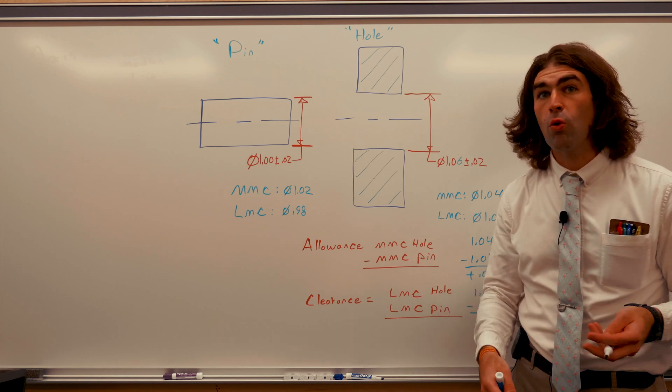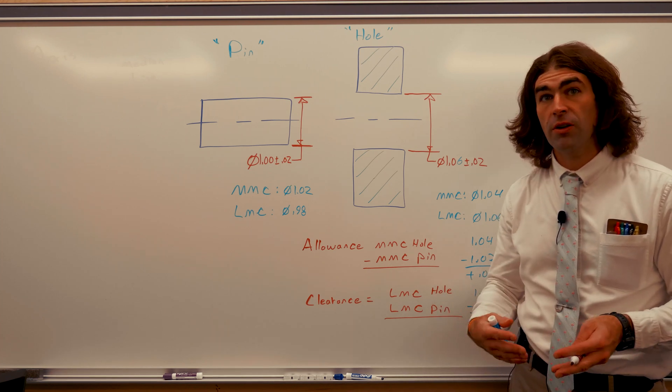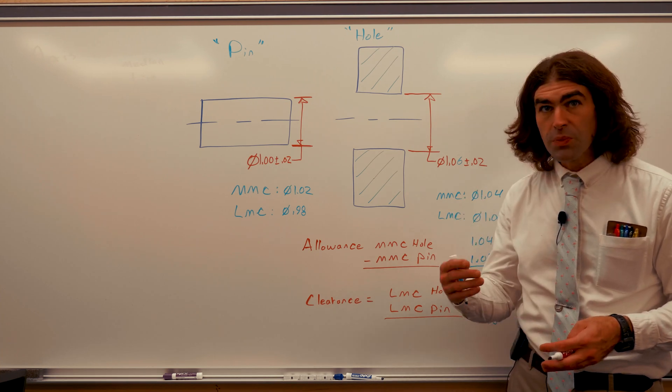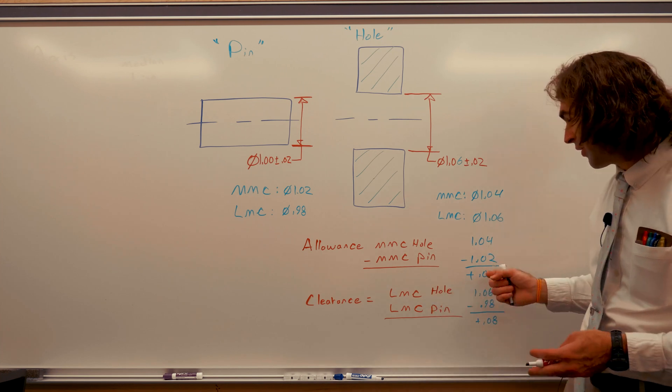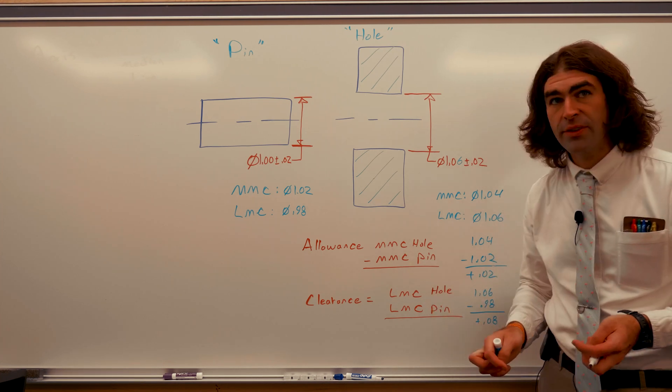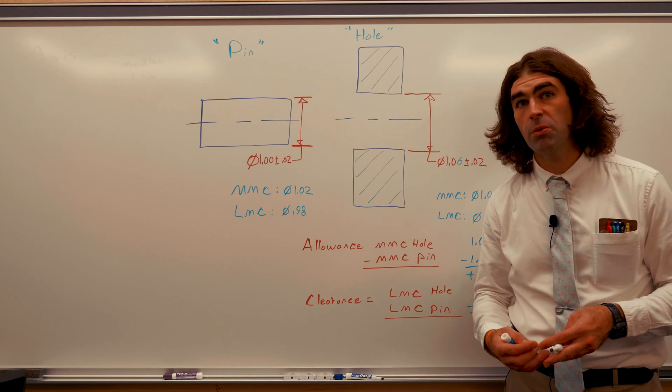So tolerancing is just fiddling with these numbers to get what you want. There's going to be a requirement that comes down from engineering. They'll say, hey, you know, this thing needs to always have this amount of allowance, say 20 thousandths, but we can deal with up to 80 thousandths of clearance.